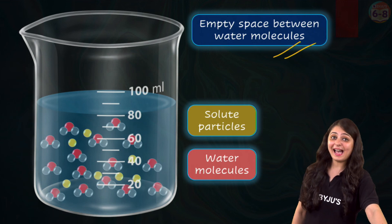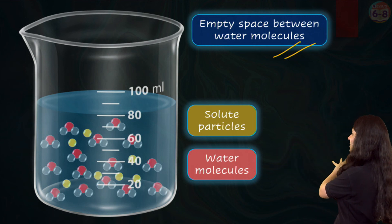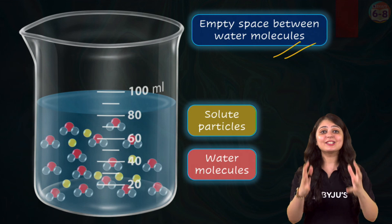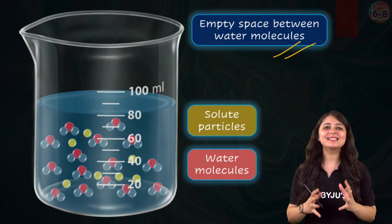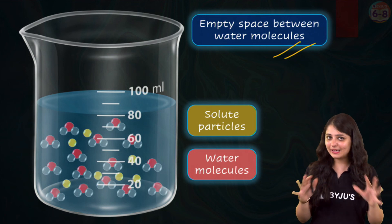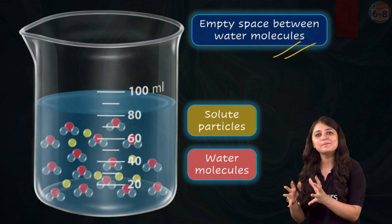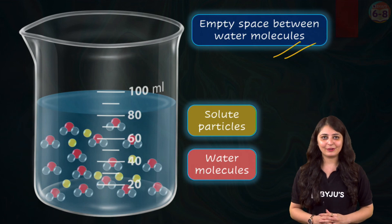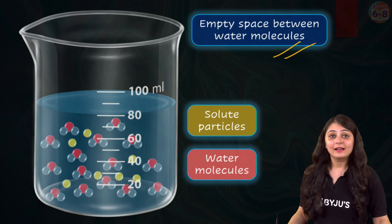As we can still spot the empty spaces over here, that means there is still space for more solute. Such a solution is called an unsaturated solution in which more solute can be added. In a way, it contains less than the maximum amount of solute that is capable of being dissolved.